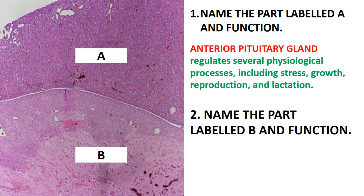The function of the anterior pituitary gland is to regulate several physiological processes, which includes stress, growth, reproduction, and lactation. When a woman is breastfeeding, the anterior pituitary gland is the one which regulates that process. Even when you are stressed, it is the anterior pituitary gland which regulates that stress.